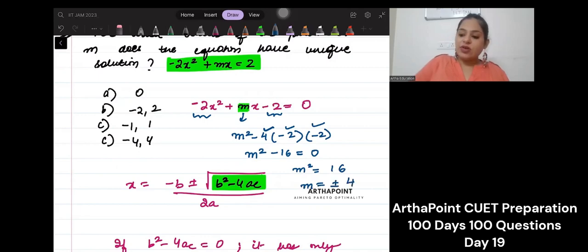So when your m takes the value plus or minus 4, then you will have only one solution to x. Only one single solution of x would be possible. Is this clear?